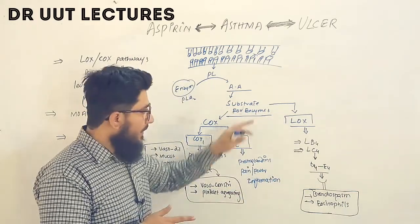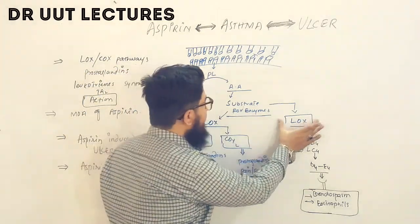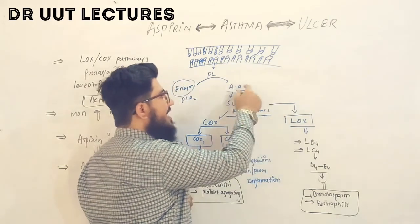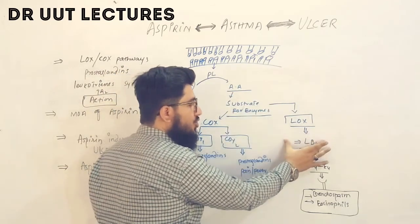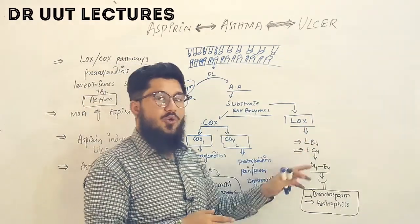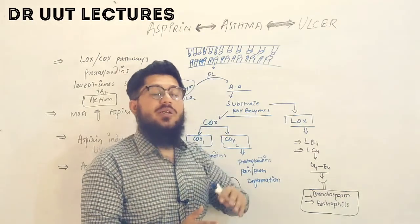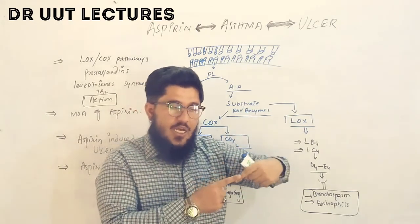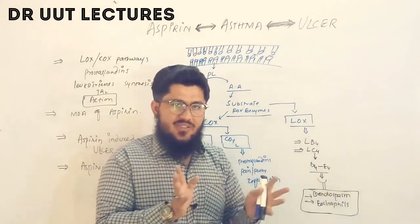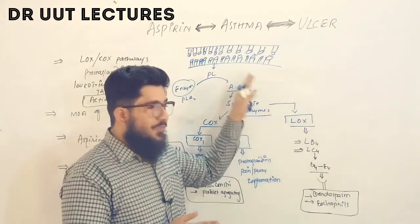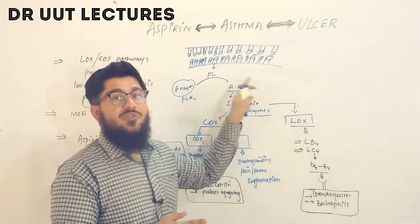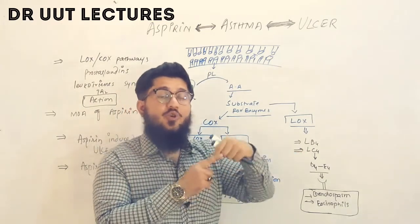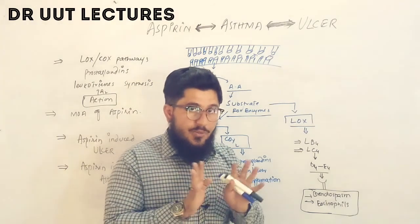Regarding the LOX pathway: when the enzyme 5-lipoxygenase interacts with arachidonic acid, it produces leukotrienes — specifically leukotriene B4, C4, D4, and E4. First leukotriene B4 is produced, then C4, which differentiates into C4, D4, and E4. These leukotrienes then bind to receptors and exert their actions.